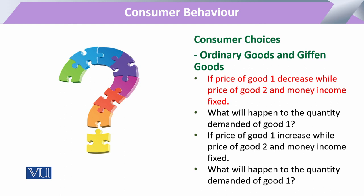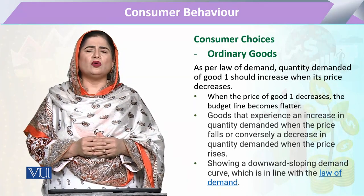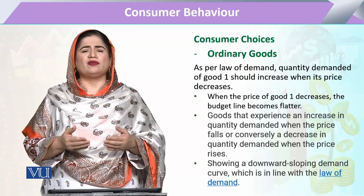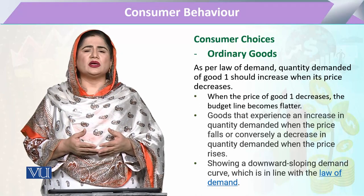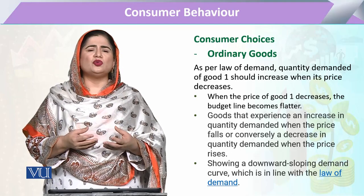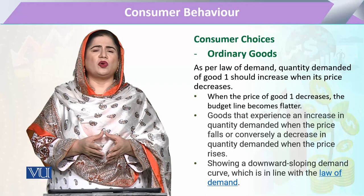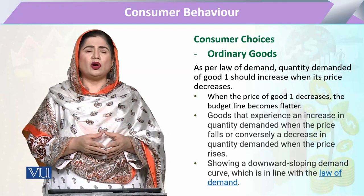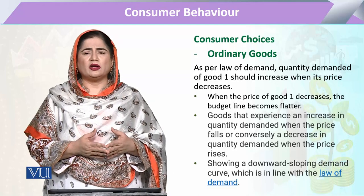Studying this, we arrive at two types of commodities. The first is called ordinary goods — those that follow the law of demand, meaning whenever the price of a commodity increases, the consumer decreases its consumption. Conversely, when the price decreases, the consumer purchases more. All commodities that follow this behavior are called ordinary goods, and they show a negative demand curve.